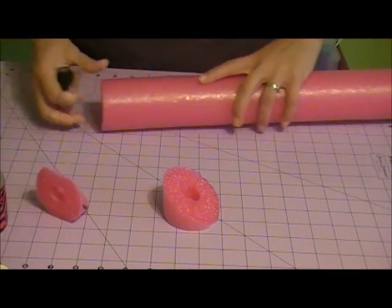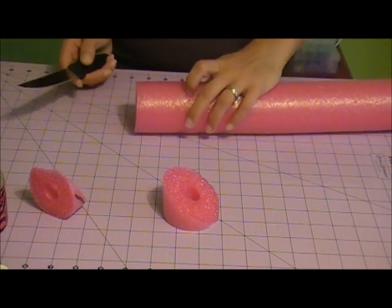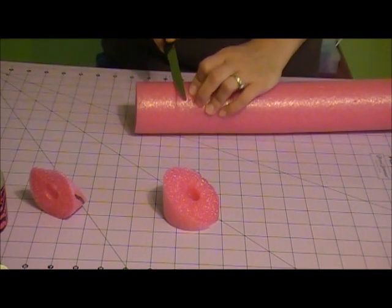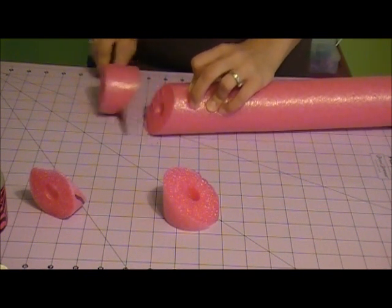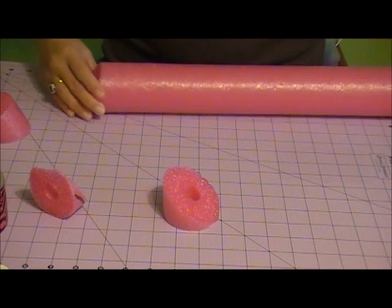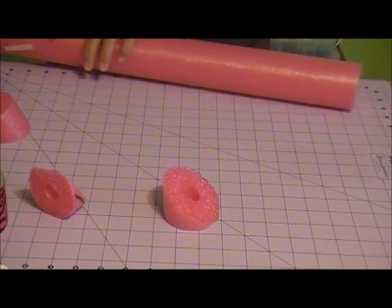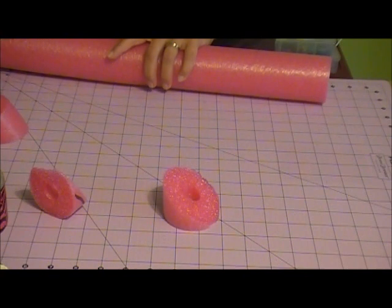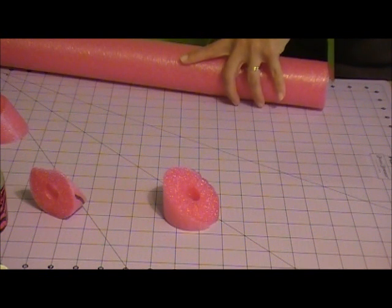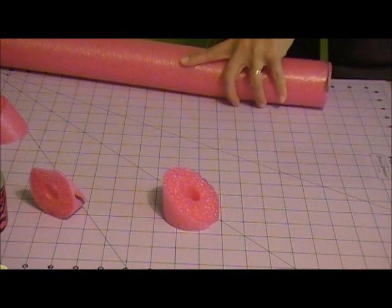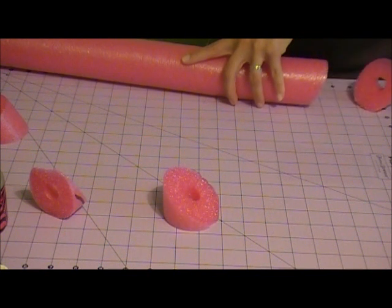After you've marked your pool noodle, be very careful. If you are a child, definitely get an adult to help you with this. Do not do this yourself. I'm cutting it just like this and then I'm going to try to keep it straight so that I don't get mixed up. You can cut it just like that.